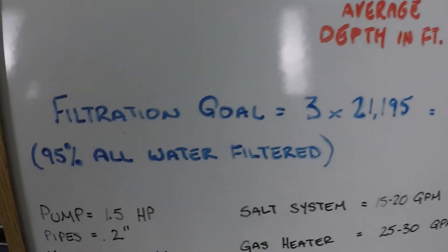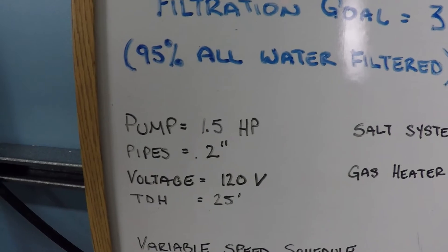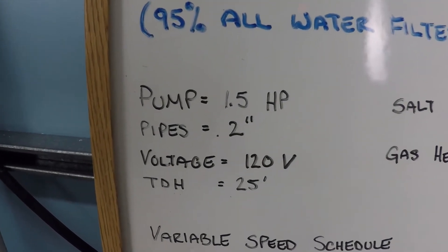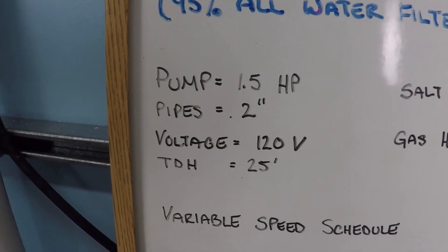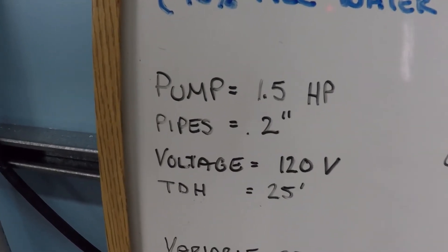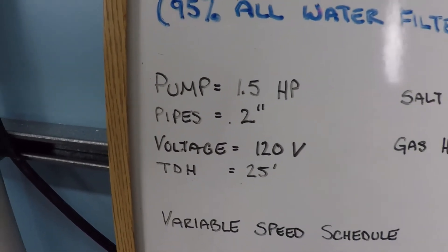So here's some of the parameters we're working with on this pool. One and a half horsepower pump, two inch plumbing size. The pump is installed at 120 volts and the TDH is relatively low at about 25 feet.